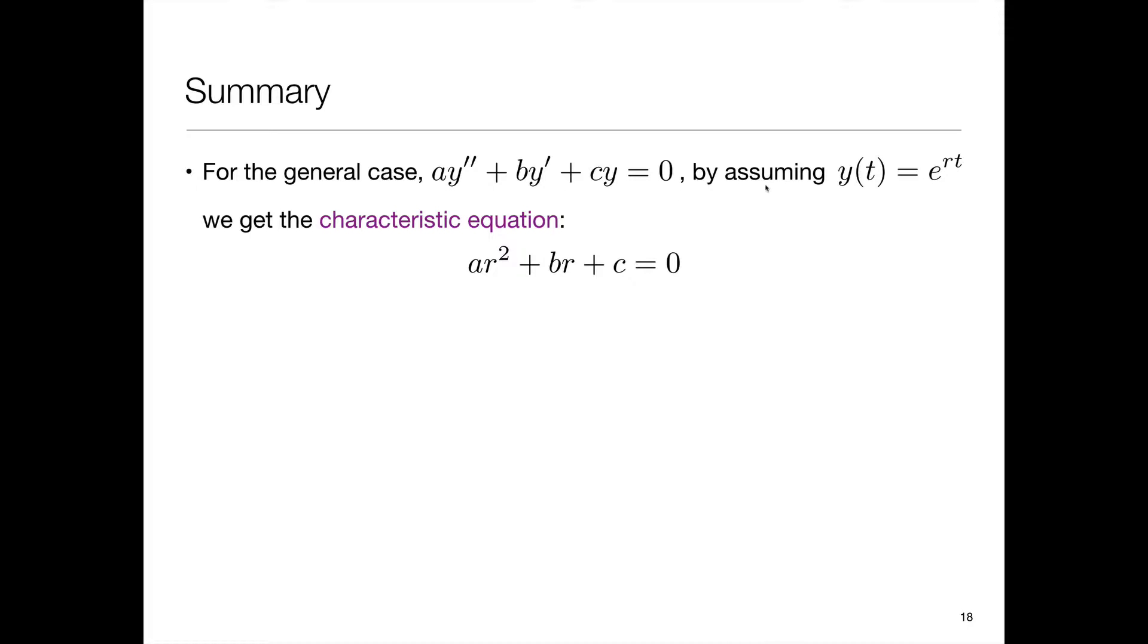What we've done so far is we've used the ansatz that the solution has exponential form with an unknown exponent r times t, and when we make that assumption we get the characteristic equation ar squared plus br plus c equals zero by plugging that in.